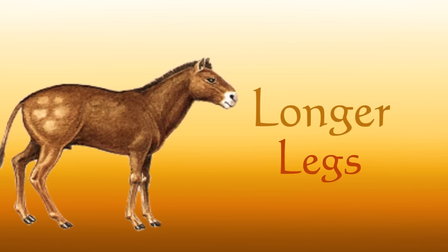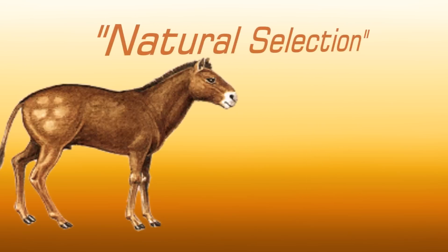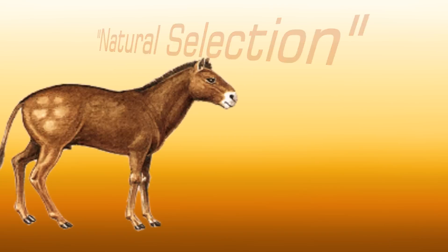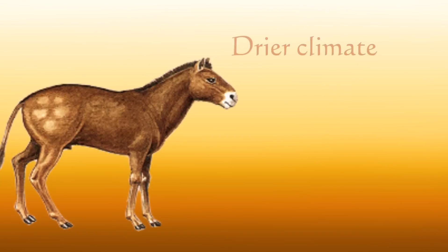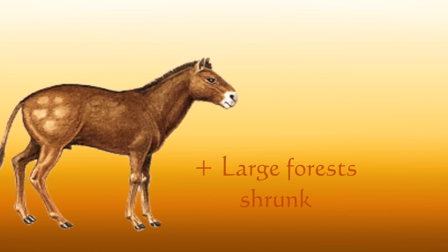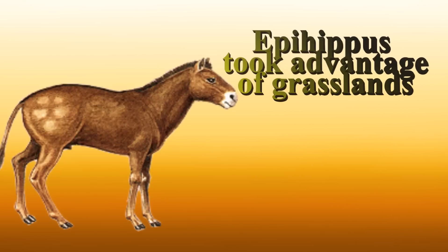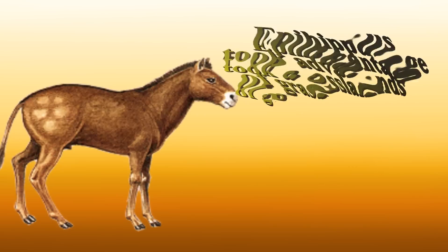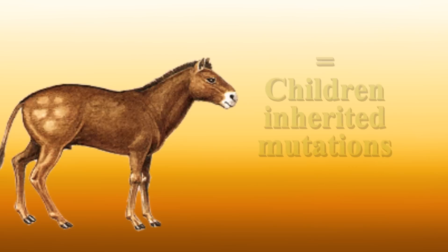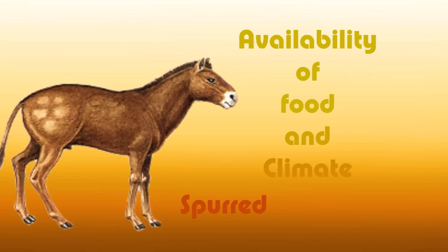The epihippus had longer legs in addition to their extra molar, and this too was caused by natural selection. The North American climate was becoming much drier, grasses were just starting to evolve, and larger forests were beginning to shrink. The epihippus were able to take advantage of the open grasslands, allowing them to be more successful, and causing their offspring to inherit longer legs and the extra molar. The availability of food and climate spurred this particular evolution.